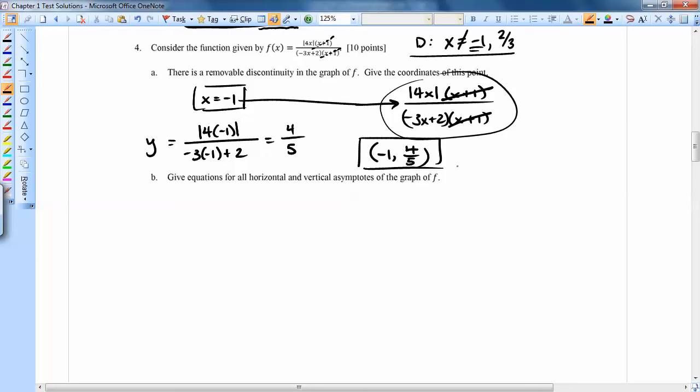The next one says give all equations for horizontal and vertical asymptotes. Well, the ones that don't cancel in the denominator give us the vertical asymptotes. So again,